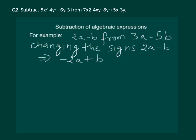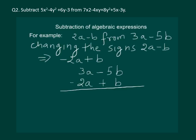The next step is to add 3a minus 5b and the changed algebraic expression. So we get 3a minus 2a, which is a, and minus 5b plus b gives us minus 4b. So a minus 4b is the answer to the question: subtract 2a minus b from 3a minus 5b.